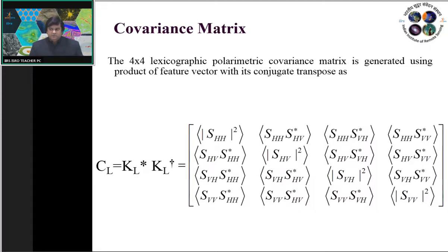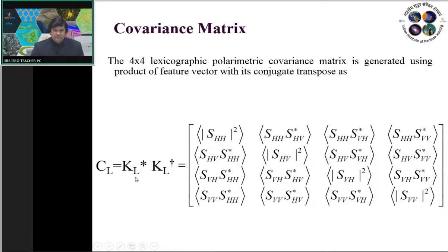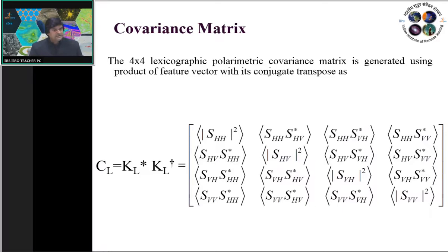The covariance matrix is generated when the lexicographic feature vector is multiplied by its own transconjugate. The lexicographic feature vector is a 4×1 matrix; taking the transpose gives a 1×4 matrix. We must also take the complex conjugate since HH, HV, VH, and VV are all represented in complex number format A + iB, where A is real and B is imaginary. Thus we take the transconjugate of the lexicographic feature vector combinations.